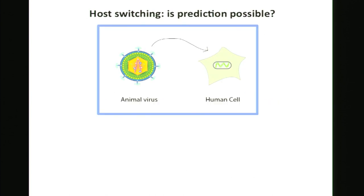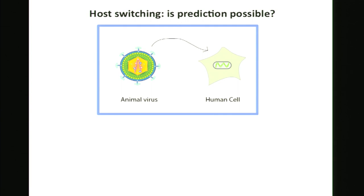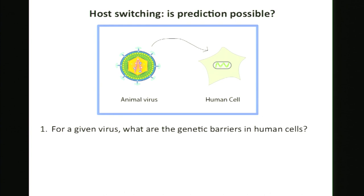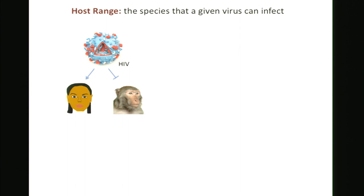My lab and several others are interested in addressing this — we study how animal viruses evolved to replicate in human cells. Most labs sequence hundreds or thousands of viral genomes and build phylogenetic trees. My lab has a completely unique approach that doesn't involve looking at virus sequences at all. Instead, we break the question into two sub-questions: for a given virus, what are the genetic barriers in the human cell? And once we've identified those, what mutations does the virus need to get around them?